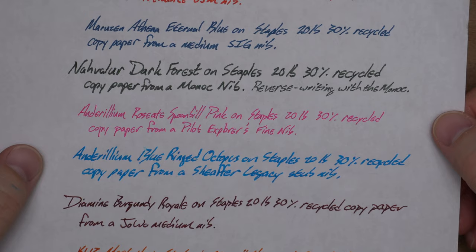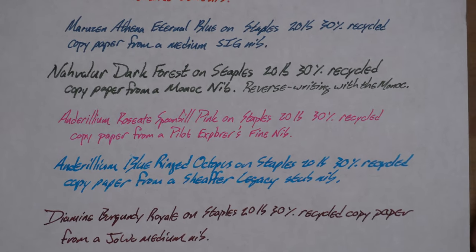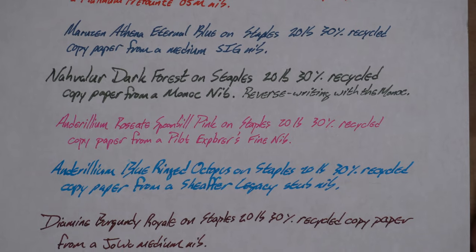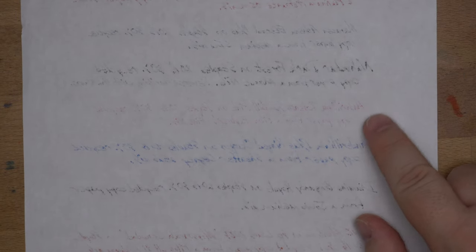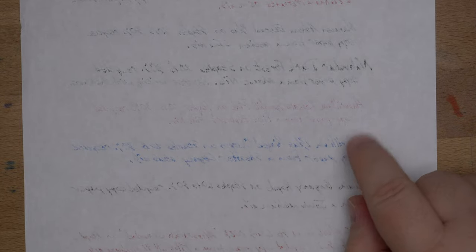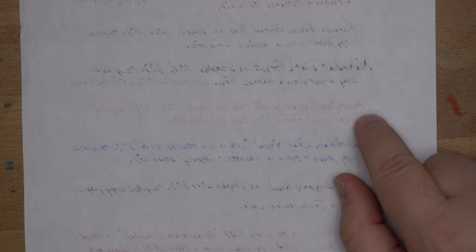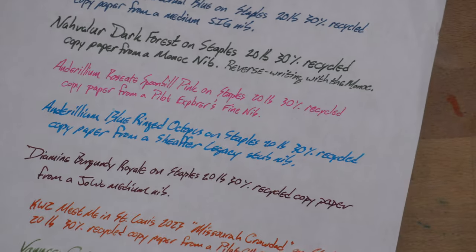So this is where it looks real great. You can see here on this Staples 20 pound, 30% recycled copy paper that you don't really have any feathering, no spreading. Still definitely very fine. And also on the back, look how good that is. That's really good. Actually, this might perform just as well, this Anderillium blue ringed octopus, if I'd had it in a finer nib. This is a pretty fine nib, so that definitely helps. But yeah, it looks great on this copy paper. I'm impressed.